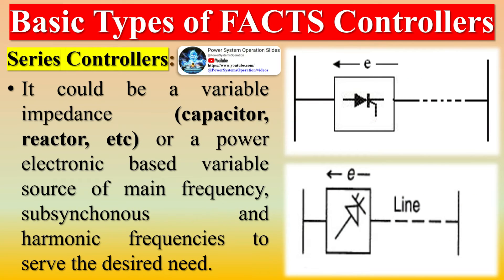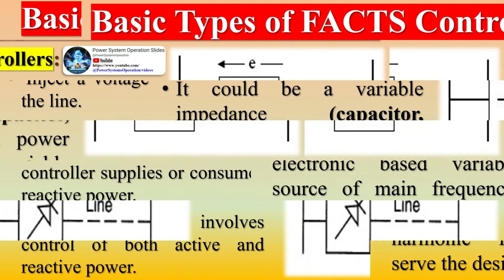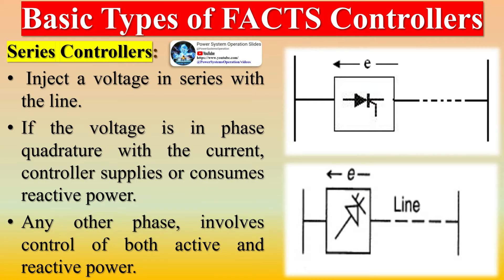FACTS can be described as a collection of controllers like phase shifters, static VAR compensators, etc. The major operation of the FACTS system is by varying the apparent impedance of a particular transmission line so that the flow of power can be improved over the required path. By controlling the impedance of the transmission line with electronic devices, a constant power flow in the required path can be achieved. The power flow can be maintained in case of any variations in load levels or any contingencies.